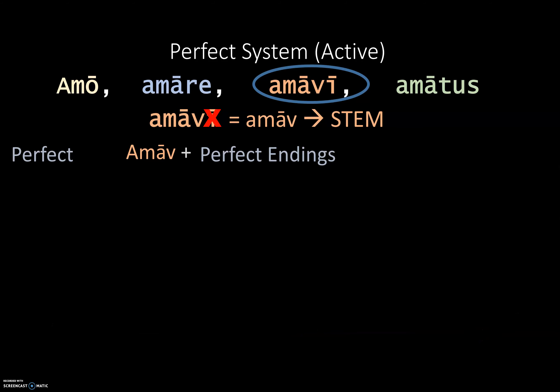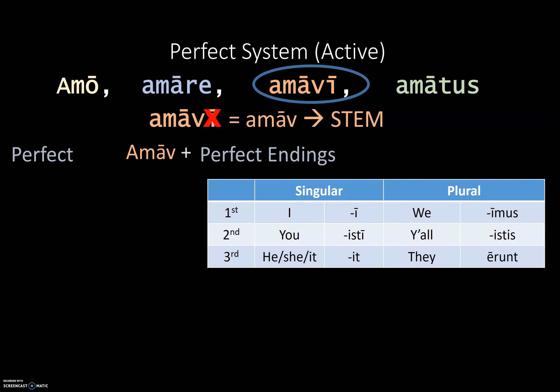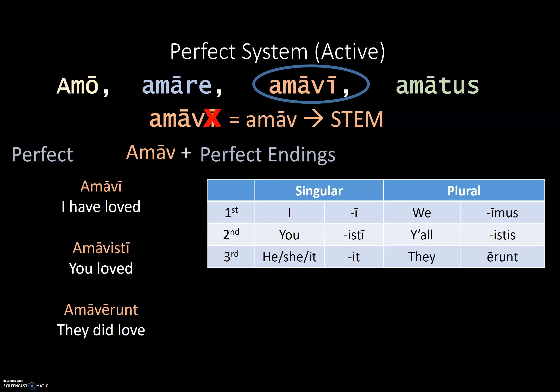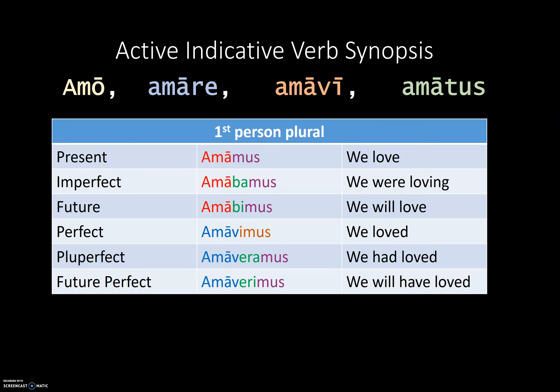The perfect tense has its own set of special endings that apply only to the perfect active indicative: I, ISTI, IT, IMUS, ISTIS, ERUNT. We take our perfect stem and add these specialized endings: AMAVI (I have loved), AMAVISTI (you loved), AMAVERUNT (they did love). In a synopsis of these verbs, we switch from stem to stem, add tense signifiers between the stem and ending, and the endings remain the same except for the slight variation in the perfect active.